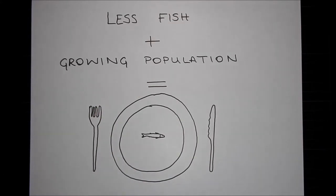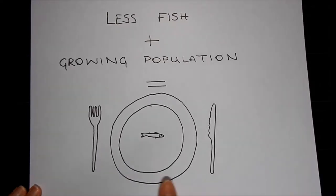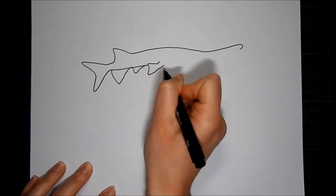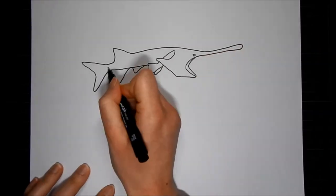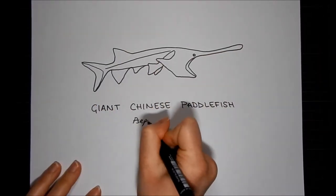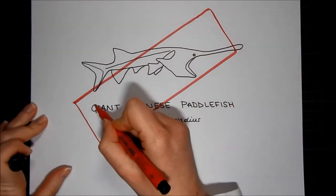But the problem of overfishing has also raised some worrying concerns about the natural world itself. For starters, our fishing activities have caused biodiversity to decrease. The Yangtze River's iconic giant Chinese paddlefish has recently been declared extinct, and overfishing played a role.